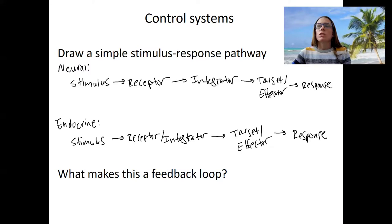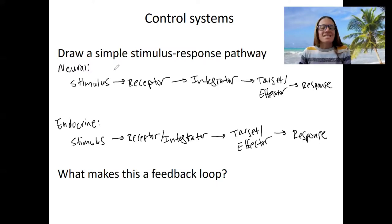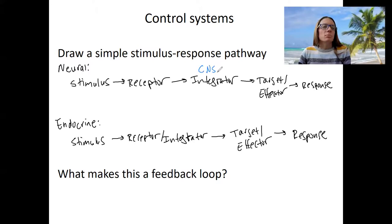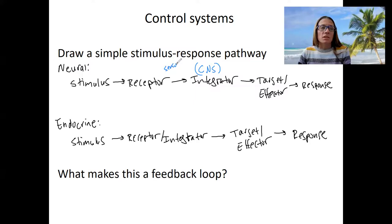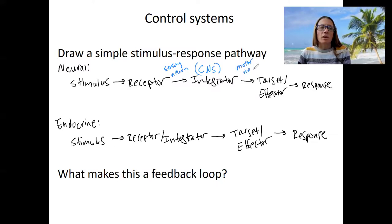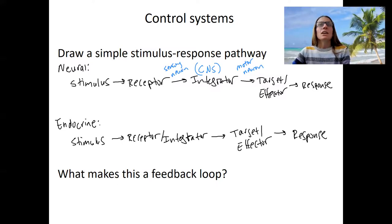For our neural feedback loop, let's put the central nervous system here. The integrator is always in the central nervous system. The input signal from the receptor is pretty much always going to be a sensory neuron, and the output signal is pretty much always going to be a motor neuron. We'll come back to the nervous system and the knee-jerk reflex in more detail later — for now the focus is endocrine.